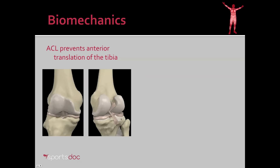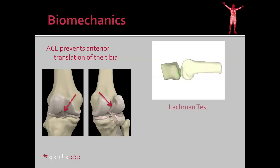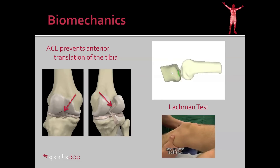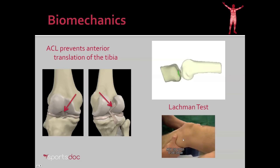Here's the ACL from the front and from behind, along with the PCL from behind. What motion does the ACL prevent? Here you see a computer animation of the Lachman test, where the examiner tries to pull forward on the tibia and see how far it slides anteriorly. If it slides too far, that's called a positive Lachman test. There are three grades of the Lachman test. In this patient, the tibia is loose and the ACL is clearly torn.